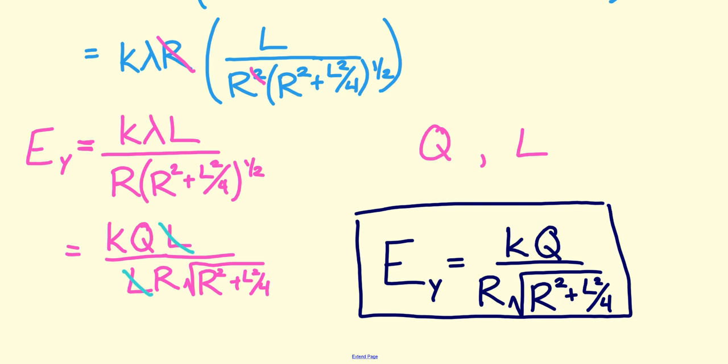You'll notice that as L gets bigger and bigger, the R squared doesn't matter quite as much. And I'll also point out to you that as L gets smaller and smaller, in other words, as this object approaches a particle, my equation approaches the electric field of a particle.